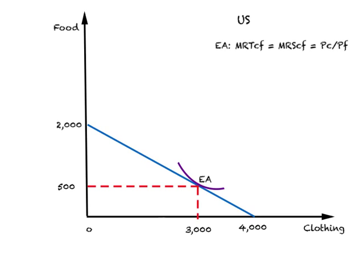Consider the following diagram for the U.S. We are looking at two goods: clothing and food. This blue line represents the PPC for the U.S. And since it is a straight line, that means it exhibits the constant cost principle. This PPC tells us that if the U.S. uses all its resources to produce food, the maximum amount it can produce is 2,000 units. If instead the U.S. devoted all its resources to clothing, the maximum amount of clothing it can produce is 4,000 units.